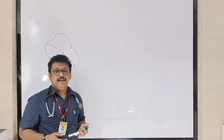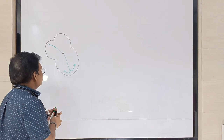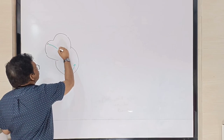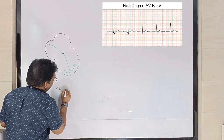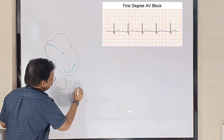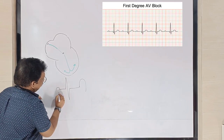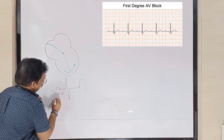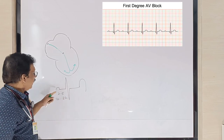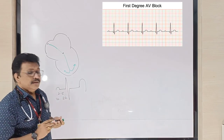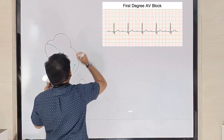Let's look at normal SA node to AV node conduction. It starts from the P wave to the QRS complex. Normally it takes three to five small squares — 0.12 to 0.2 seconds. This is the normal time from the P wave to the QRS complex. If there is a problem in conduction from SA node to AV node, we will see abnormalities.